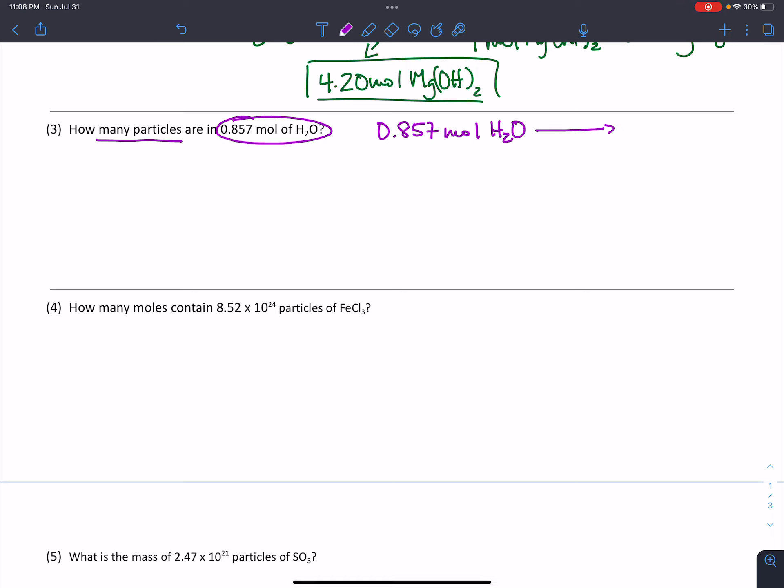So we're going to take that 0.857 moles of water and calculate how many particles of water that would be. Now you can put the word molecule in there, and that's perfectly fine. To do that, we're going to need Avogadro's number for our unity quality. And no matter what substance it is, one mole of that substance contains 6.02 times 10 to the 23rd particles. It's actually a little bit easier than grams and moles because you don't have to calculate molar mass. It's always the same number.